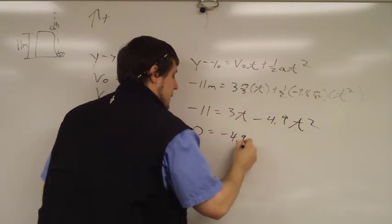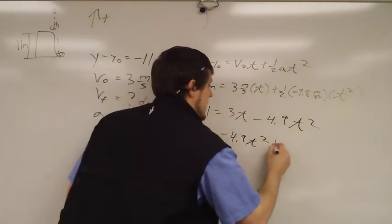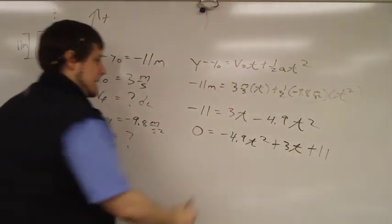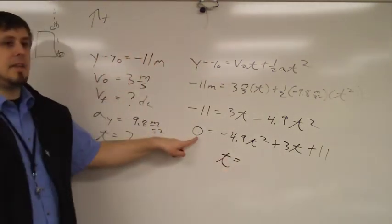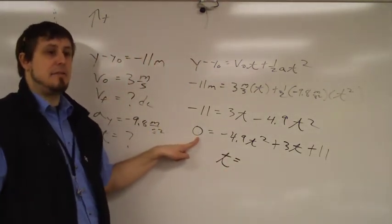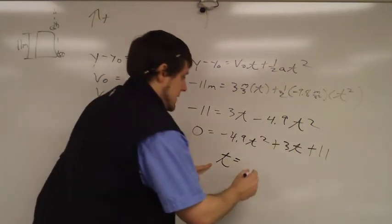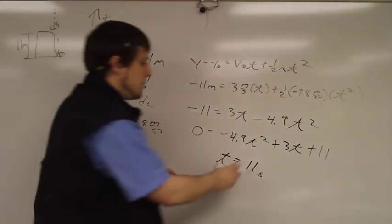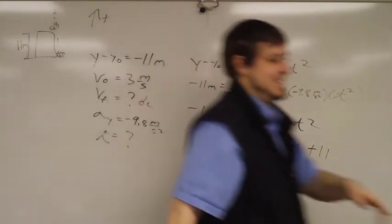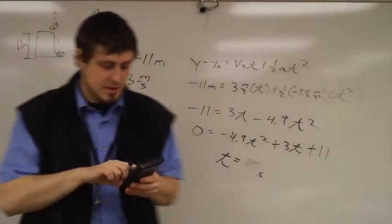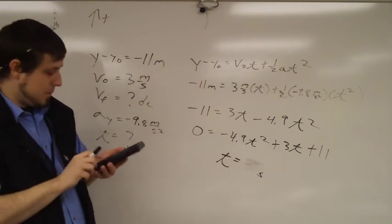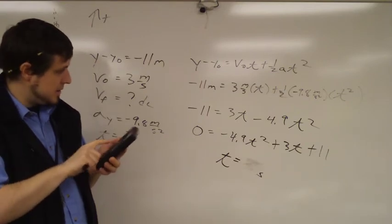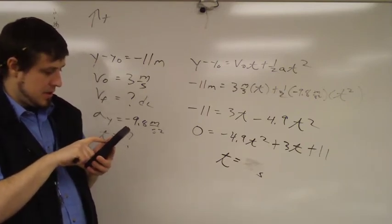So we'll get zero equals, I'm going to reorder, negative 4.9 t squared plus 3t plus 11 equals zero. At this point you got to do the math. Somebody that got that who had that on their paper, did you graph it? What did you get for t? I got 11. Can somebody else that knows how to graph this confirm? Yes, I got 1.84. You got 1.84? So I need to graph it.